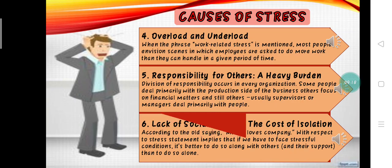The sixth cause of stress is the lack of social support — the cause of isolation. As the saying goes, misery loves company. With respect to stress, this implies that if we have to face stressful conditions, it's better to do so with others and with their support than to do so alone. Does this strategy actually work? In general, the answer seems to be yes. Research has shown that when individuals believe that they have the friendship and support of others at work, their ability to combat the adverse effects of stress is strengthened. Social support appears to be an important buffer against the effects of stress.